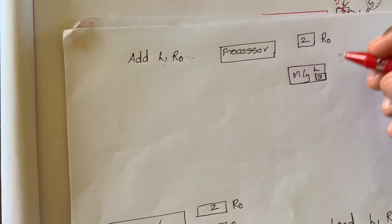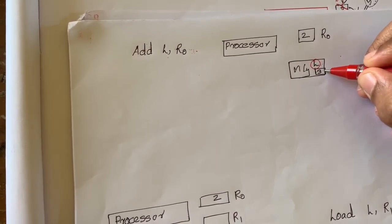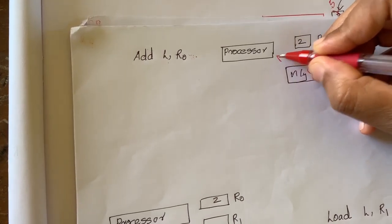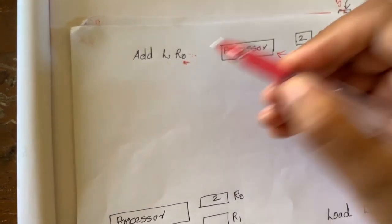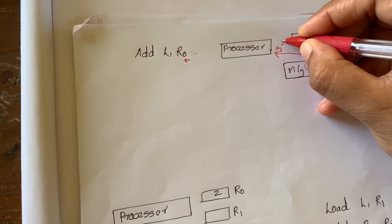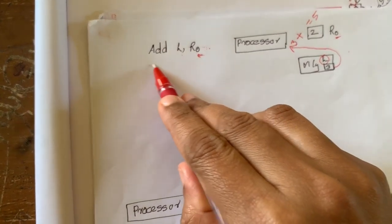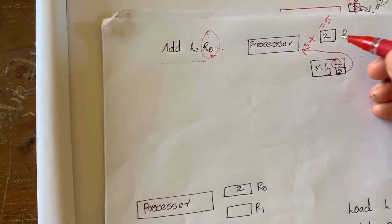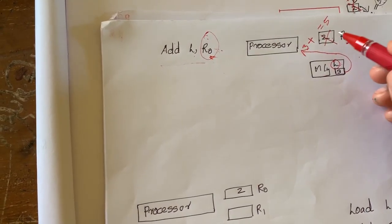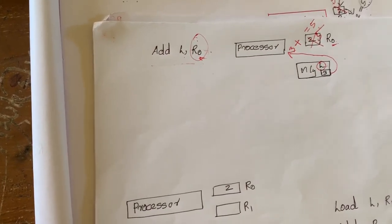What does this actually mean? Add L, R0 means: add a value taken from a memory location labeled as L with the content of register R0. The processor wants to fetch the content of the memory location labeled L — here the value at L is 3. So fetch this value to the processing side, then add it with the content of register R0. Since R0 initially contains 2, adding 3 gives a result of 5.